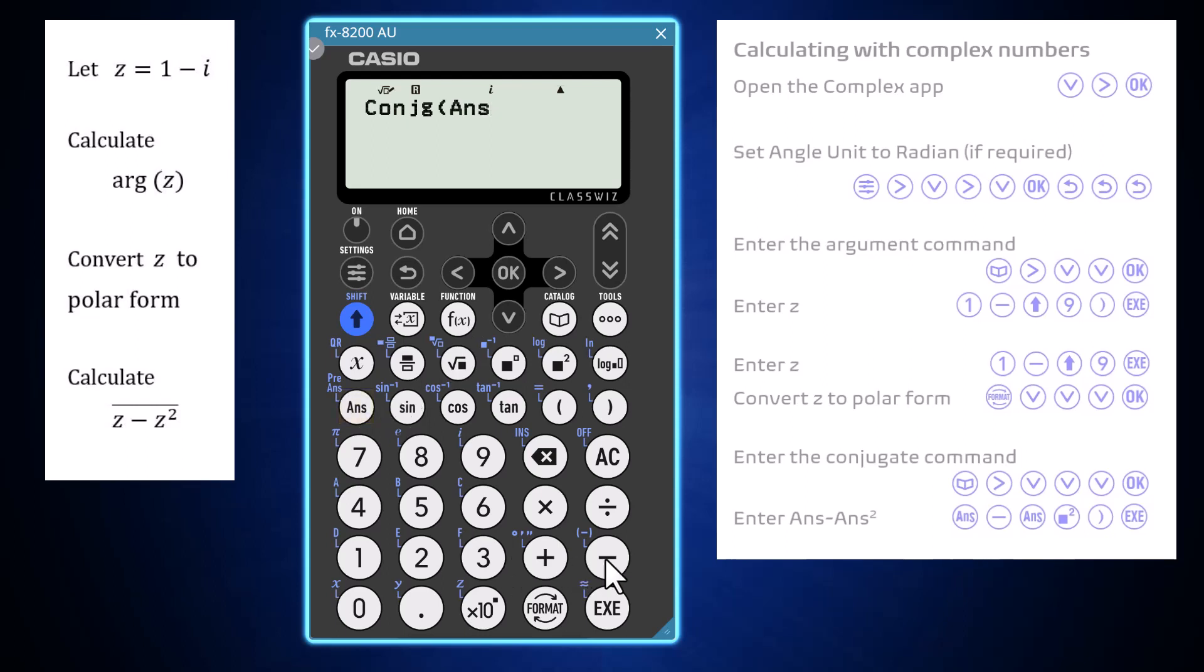Now enter z minus z squared, using ANS in place of z. Interestingly, the answer is 1 minus i, which is the complex number we started with.